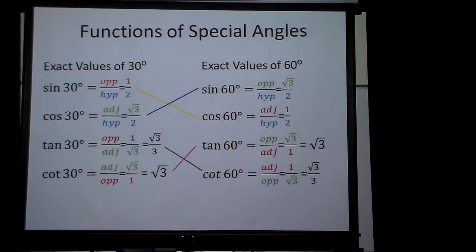Okay, some things that we notice here. Exact values of 30, notice sine of 30 degrees is equal to cosine of what? 60, because the opposite side of 30 is the adjacent side to the 60 degree angle. That's why they're both one half and the hypotenuse stays the same too.